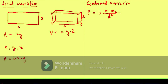Let's look at some applications and decide if we have joint variation or combined variation. The volume of a right circular cone is jointly proportional to the square of its radius. So volume equals k times r squared times h, where h is the height — and of course we have the constant of variation k.